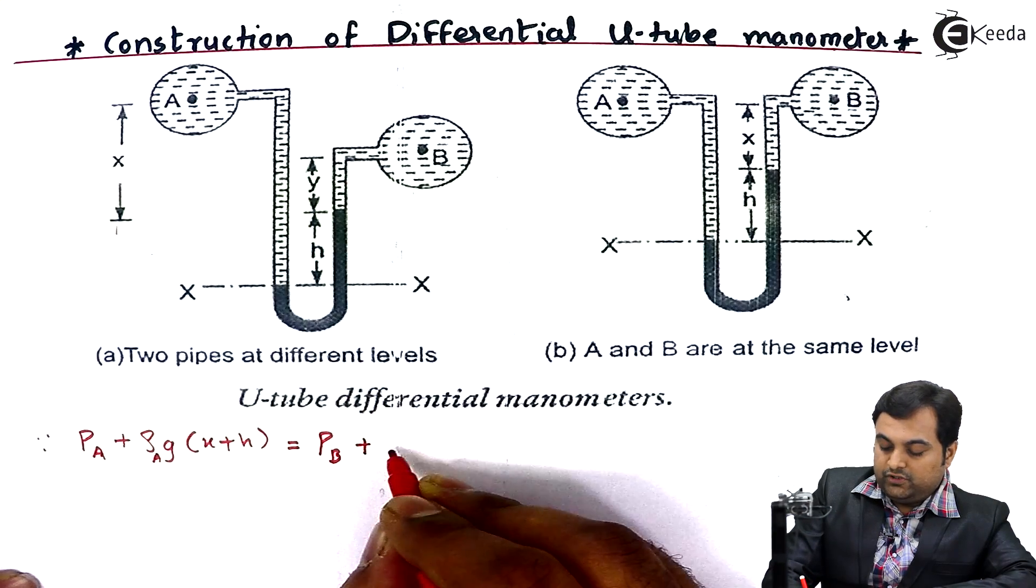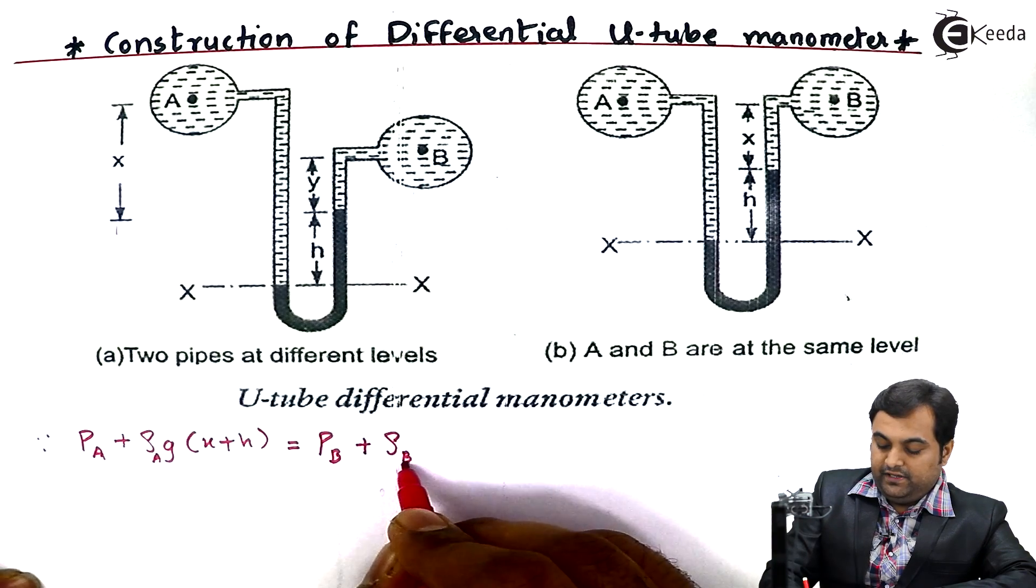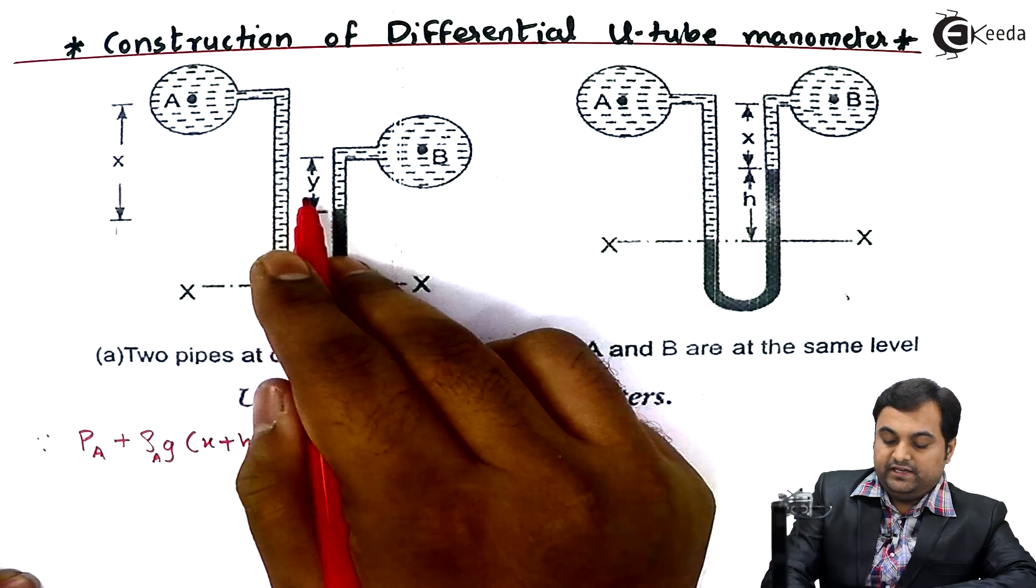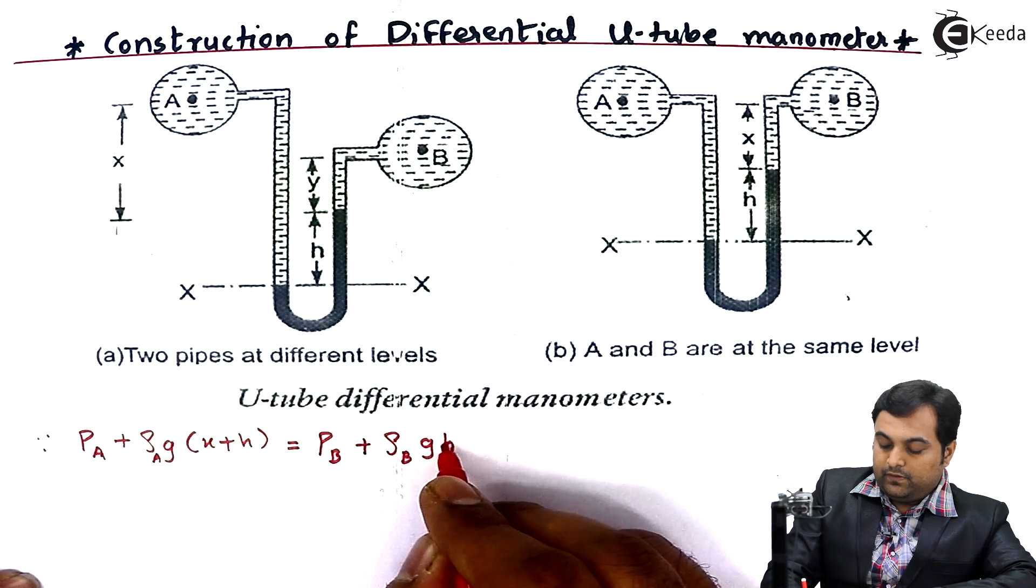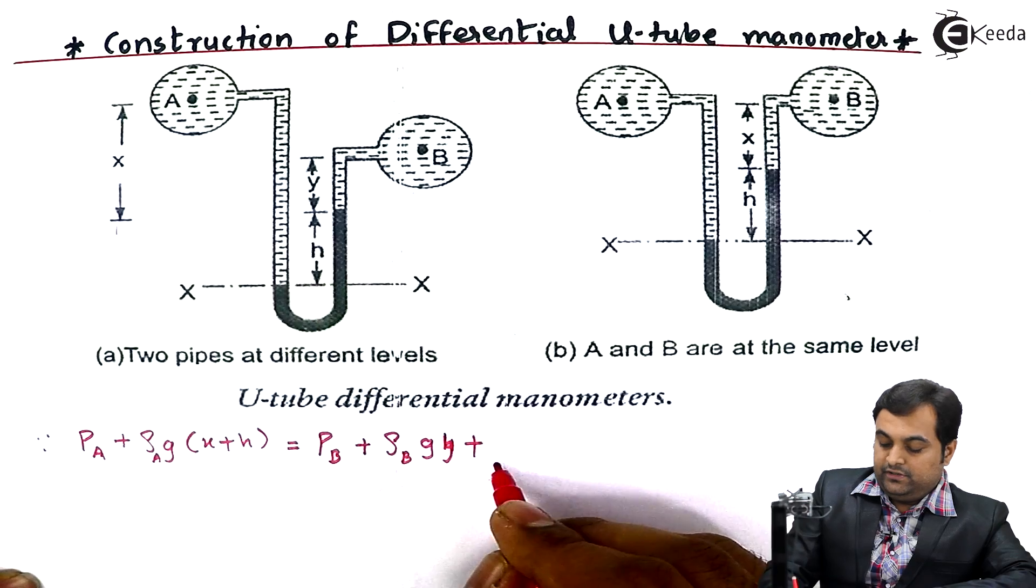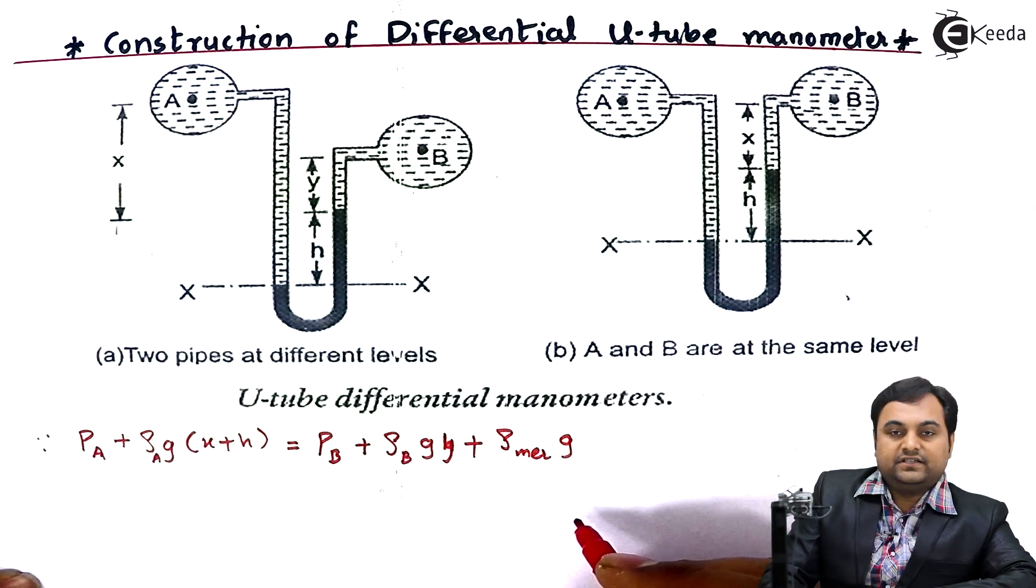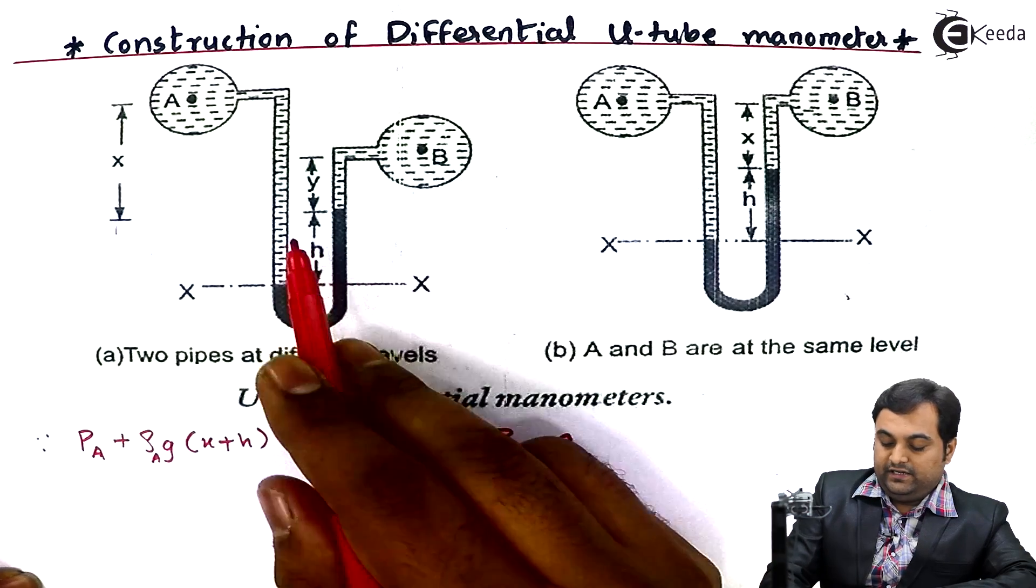So I'll write down plus rho_B, that is density of fluid in pipeline B, into g into its height, that is Y, plus the density of mercury times g, that is acceleration due to gravity, times height of mercury H.